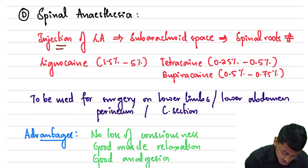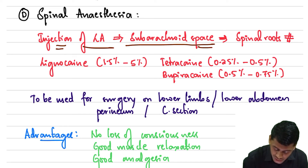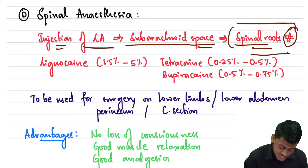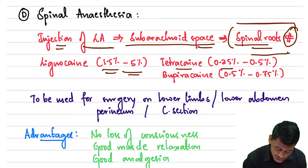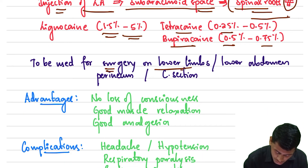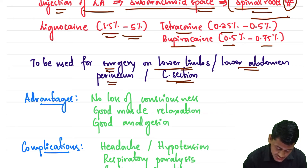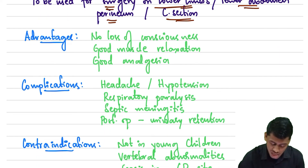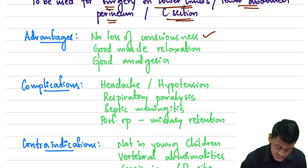Moving on to spinal anesthesia — here the local anesthetic is injected into the subarachnoid space where the spinal roots are present, completely blocking them. We can use lignocaine 1.5 to 5%, tetracaine 0.25 to 0.5%, or bupivacaine 0.5 to 0.75%. This is used for surgery on the lower limbs, lower abdomen, perineum, and caesarean section. Advantages include no loss of consciousness, good muscle relaxation, and good analgesia.